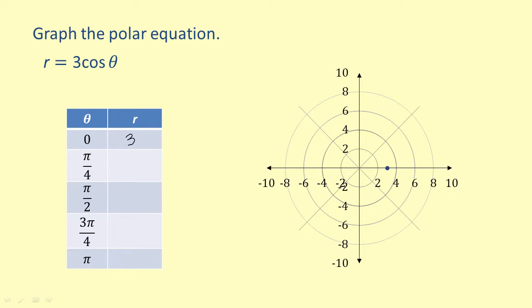Next, we'll look at the value of r when theta equals pi over four. When theta equals pi over four, the cosine of theta is equal to the square root of two over two. However, our equation is three times the cosine of theta, so we want three times the square root of two, all over two. As a decimal, this is equal to approximately two point one two, so we'll fill this into the second row.